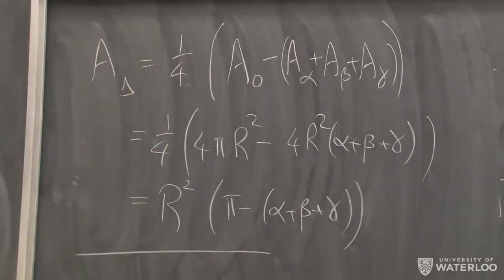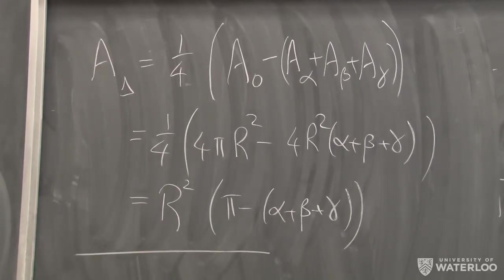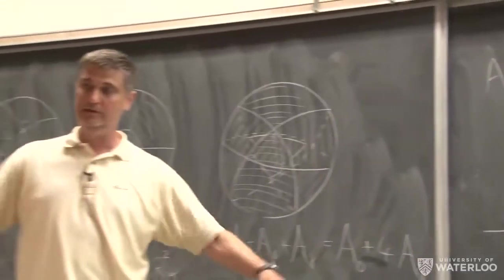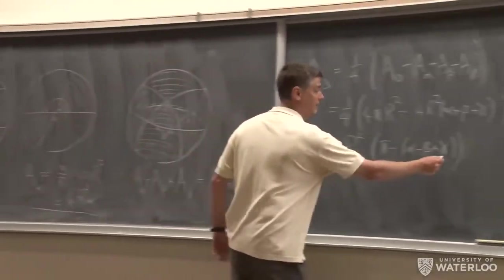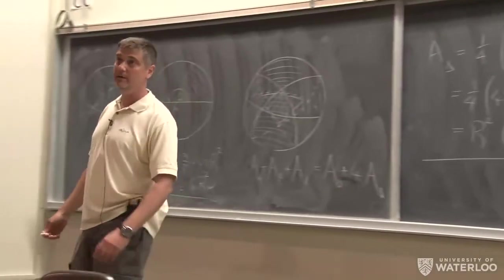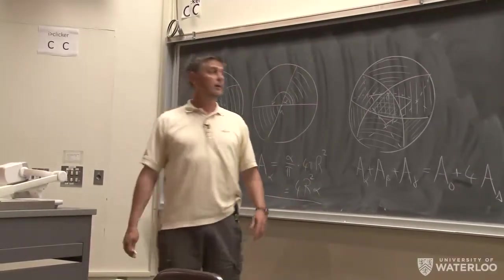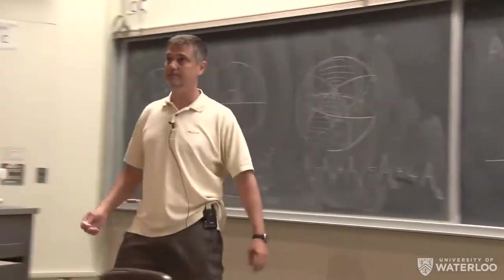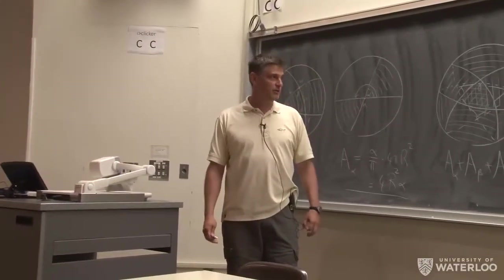That's a very nice formula for the area of a triangle in terms of its angles, and it highlights one of the differences between spherical geometry and flat Euclidean geometry. In flat Euclidean geometry, the sum of three angles is always π, so the sum of angles doesn't tell you anything about the size of the triangle. But on a sphere, the three angles actually determine the area of the triangle completely.